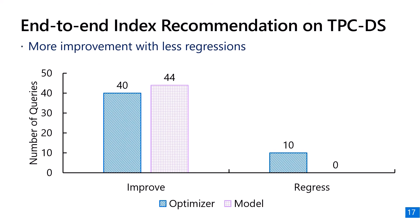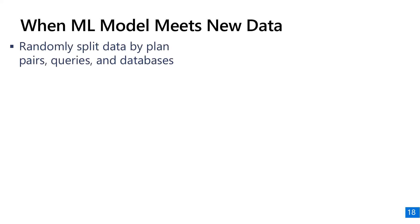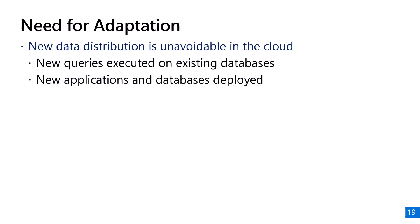The technique performs quite well when the model is trained and predicted on a similar data distribution. However, we observe that model performance degrades significantly when the data distribution becomes different. We randomly split our 15 workloads into training and test data by plan pairs, queries, and databases — three ways creating increasingly mismatched distributions. The machine learning model's prediction degrades significantly as distributions become more mismatched. When predicting on a database never seen in training, the F1 score of regression prediction is only 5% higher than using the query optimizer's estimated cost.